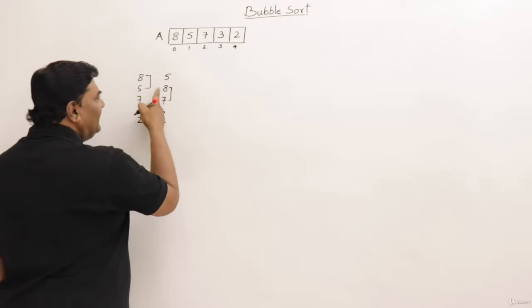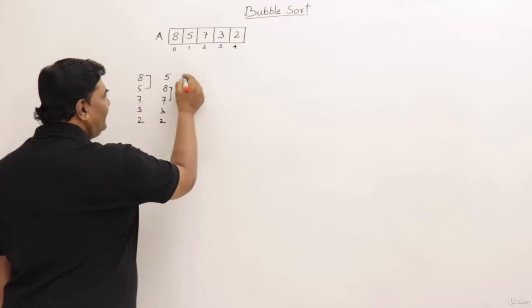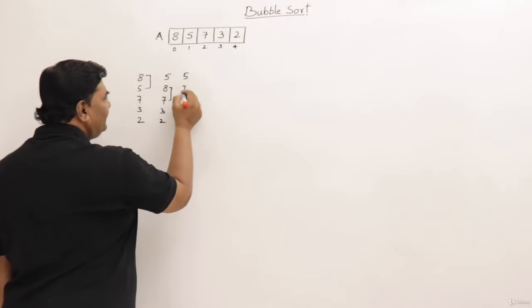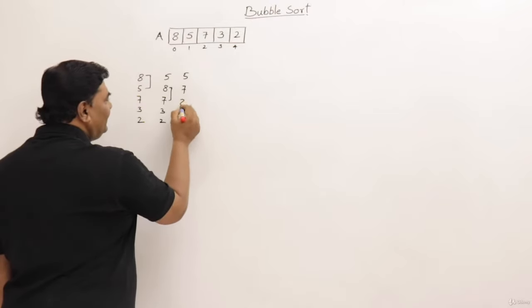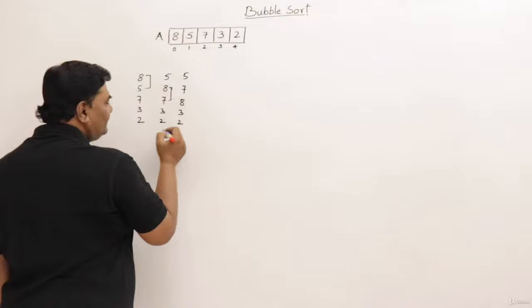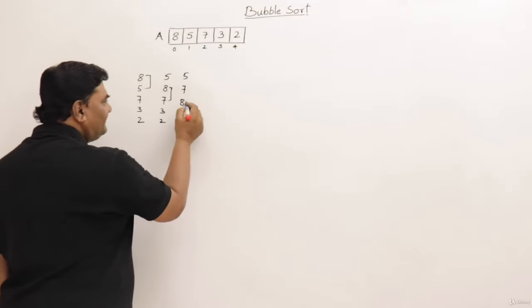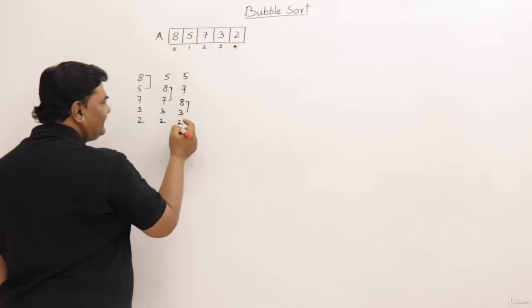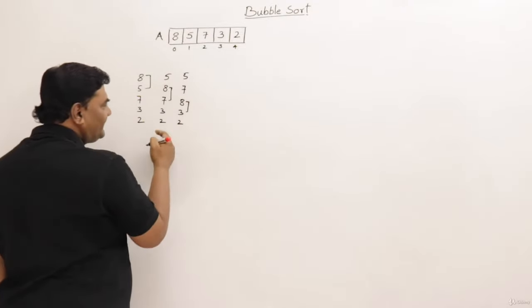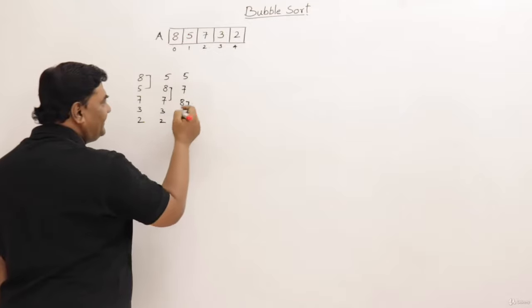Second comparison: eight and seven. Eight is greater than seven, so seven comes up and eight moves down, giving us five, seven, eight, three, two. Then the third comparison moves to the next consecutive pair of elements.